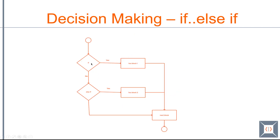We also have if-else-if. The condition will be evaluated, and if this condition is true then the first block will be executed and execution will move to the next block. If this condition is not true then it will move to the second condition; if that is true it will execute that else-if block. If neither condition is met it will move to the next block directly. You can add any number of else-if clauses and also optionally add an else block at the end.